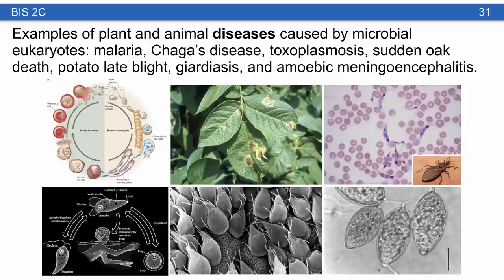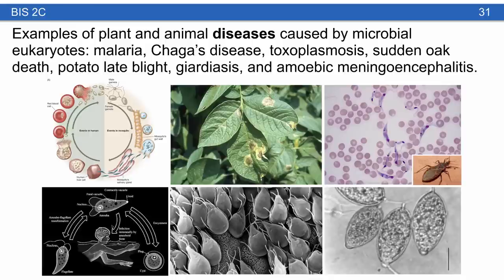We talked about many examples of plant and animal diseases caused by microbial eukaryotes, including malaria with multiple hosts — mosquitoes and humans — and the eukaryote that caused the Irish potato late blight famine. Other examples include Chagas disease, the brain-eating amoeba, Giardia, and the oomycete that causes sudden oak death. There are lots of significant pathogens to humans and human society within microbial eukaryotes.